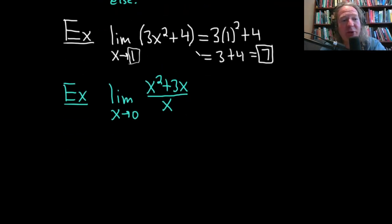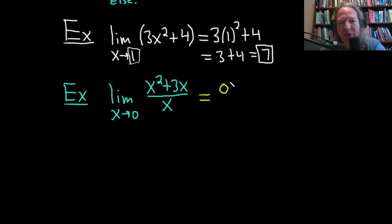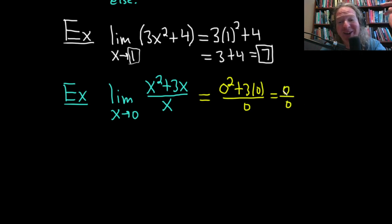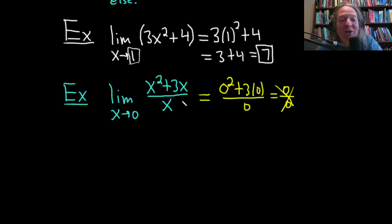If I plug in zero, I drop the limit sign and get zero squared plus three times zero over zero — so you end up with zero over zero. That's no good; you cannot divide by zero. It's an epic fail. So what do you do? You have to do something else.